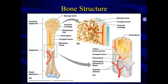The periosteum is composed of two distinct layers. The outer fibrous layer is composed of dense irregular connective tissue — it's tough, protective, and serves as attachment points for tendons and ligaments. The inner layer is called the osteogenic layer, which consists of various types of bone cells. You have osteoblasts, which lay down new bone matrix, and osteoclasts, which reabsorb the bone matrix. These two cell types are very important for bone growth and bone remodeling.